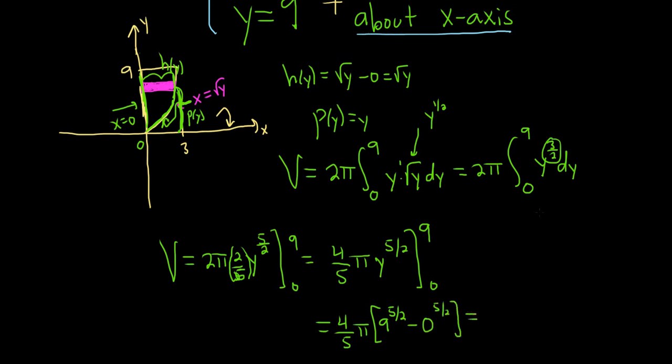So this is equal to, well, 9 to the 5 halves. The way you can do that is you put the 2 here in the little pocket. The 9 goes here. And you can put the 5 anywhere you like. So it's the square root of 9, which is 3. So we get 3 to the 5th, which is 243.